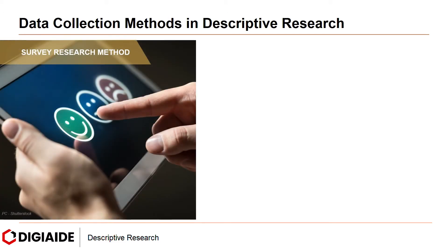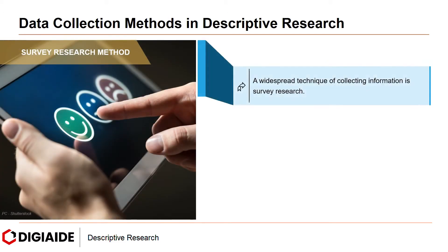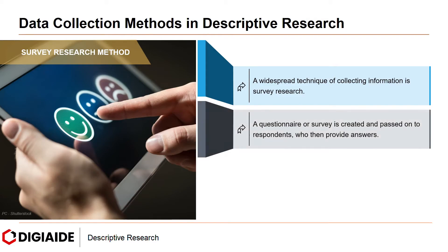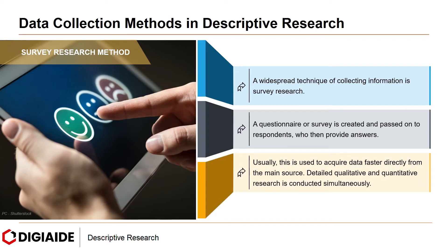Next comes the survey research method. A widespread technique of collecting information is survey research. A questionnaire or survey is created and passed on to respondents who then provide answers. Usually, this is used to acquire data faster directly from the main source. Detailed qualitative and quantitative research is conducted simultaneously. Sometimes surveys can be a mix of quantitative and qualitative research methods.